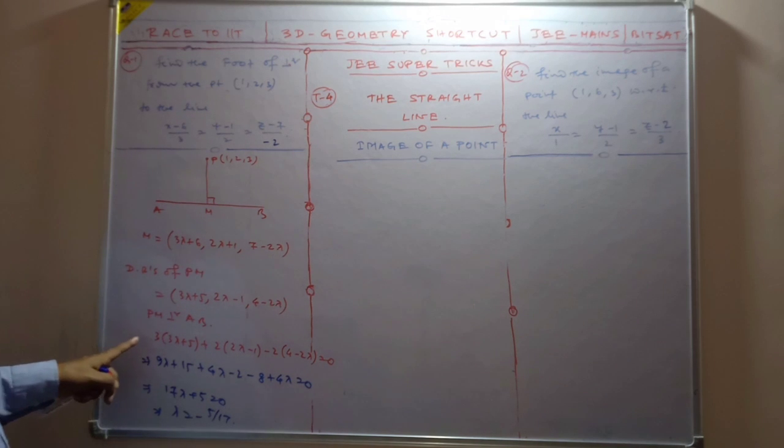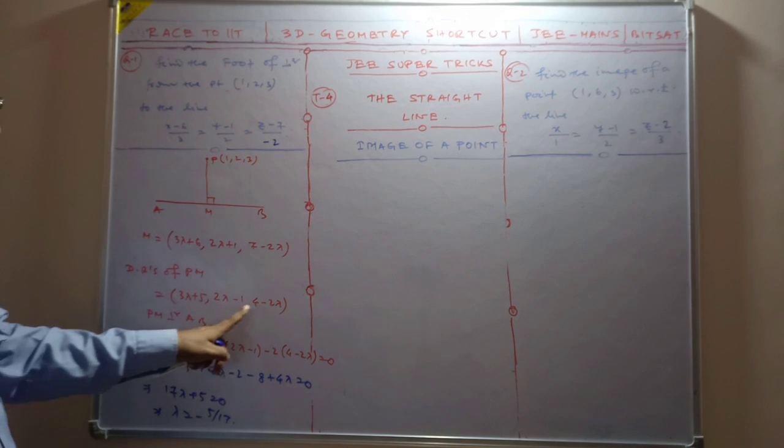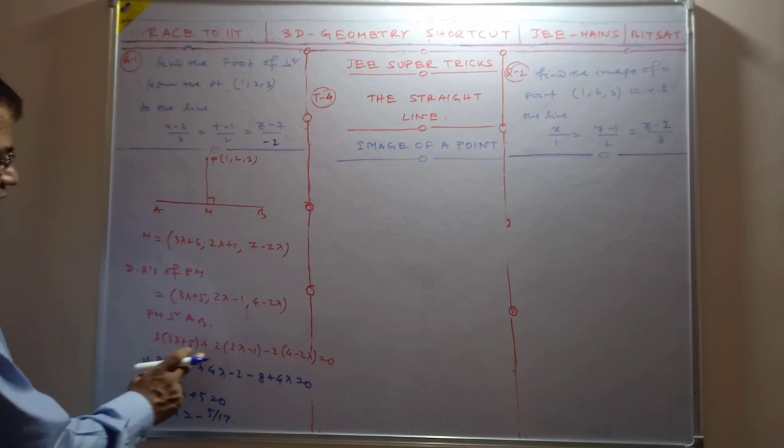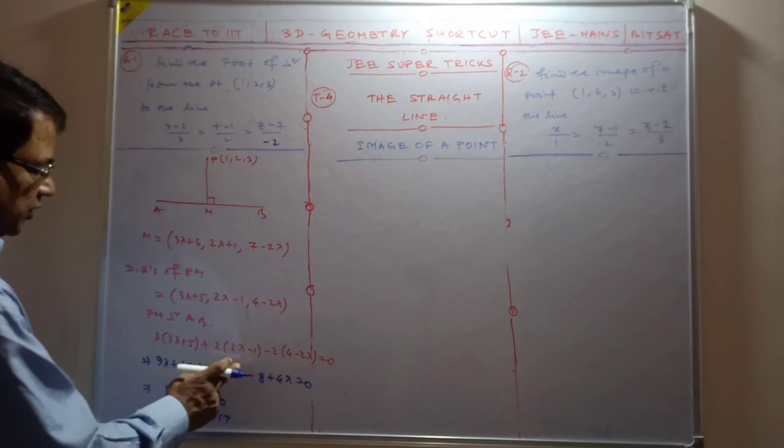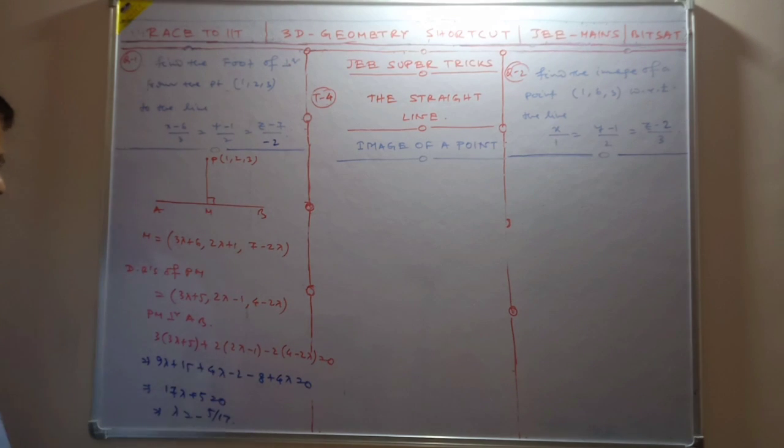So this is 3 lambda plus 5, 2 lambda minus 2, and 4 minus 2 lambda. So 3 into this, 2 into this, minus 2 into this. Lambda value is minus 5 by 17.